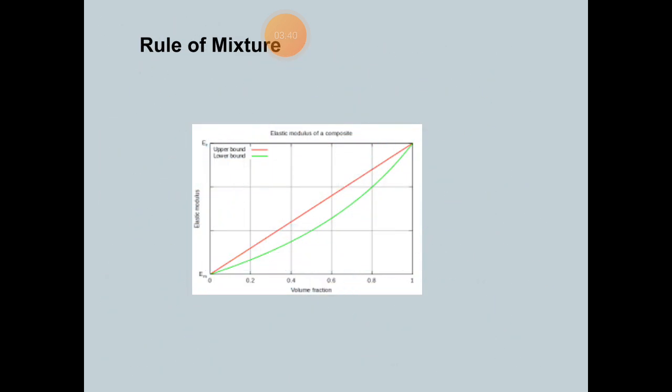The rules of mixture here show upper bound and lower bound. Thus, the proportion is between volume fractions and elastic modulus of the composites. How the volume fractions are proportional to the elastic modulus is shown in this graph. Both increase but with some tilt to the right side for the rules of mixture.